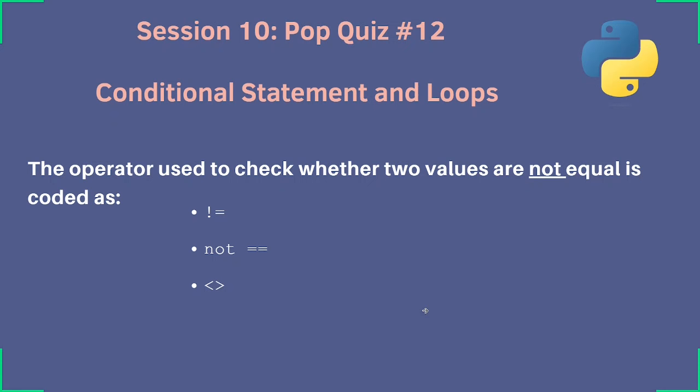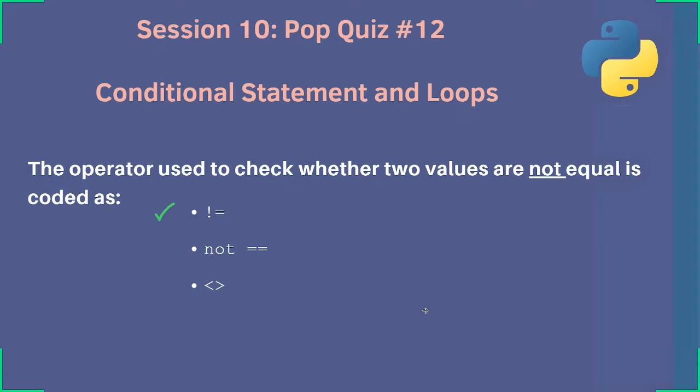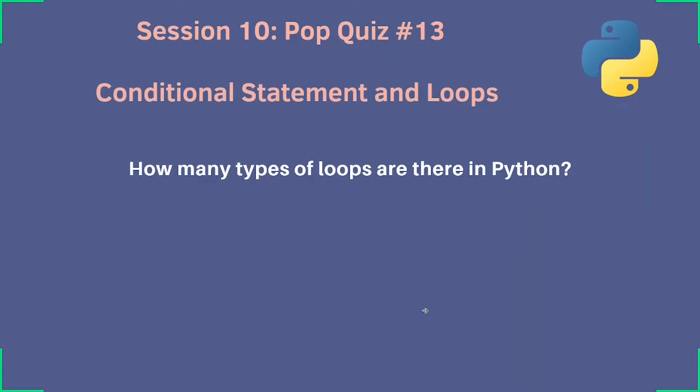Quiz question 12 on conditional statements and loops. The operator used to check whether two values are not equal is coded as exclamation-equals. How many types of loops are there in Python? There are only two: for loop and while loop. If, if-else, and if-elif-else are conditional statements, not loops. Note that other languages like C and Java have a do-while loop, but that does not exist in Python.